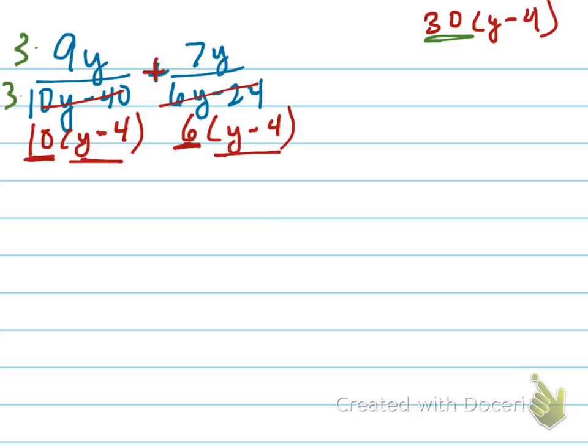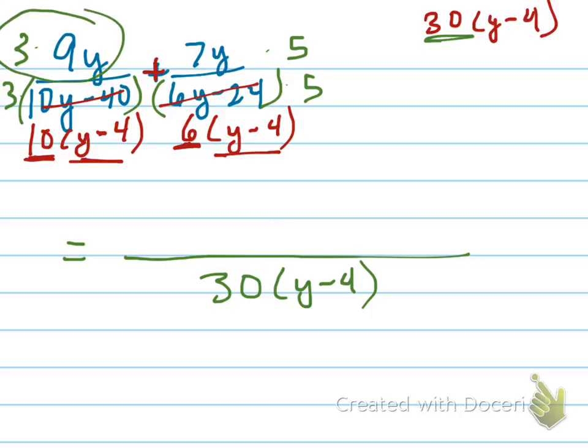And on the second equation, I'm missing a 5. So let's now rewrite my equation. The denominator is, of course, going to be 30 times y minus 4, because that was the least common denominator.